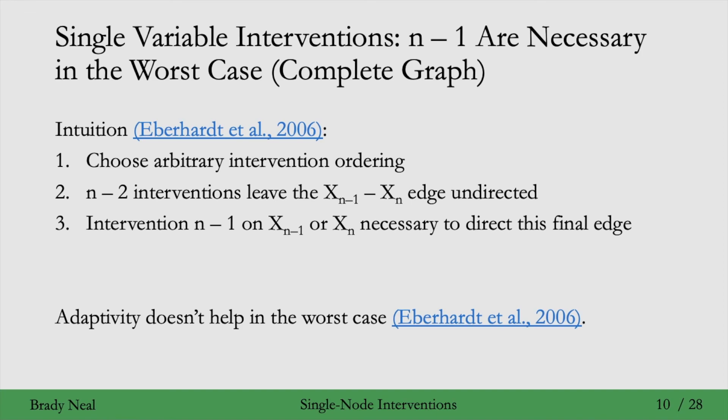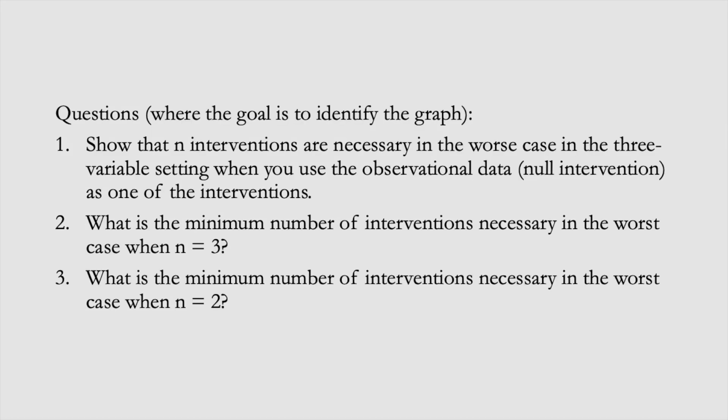That brings us to the end of the first section on single variable interventions and to a list of questions. The first question: show that n interventions are necessary in the worst case in the three-variable setting when using observational data as one of the interventions. The second question: what is the minimum number of interventions necessary in the worst case when n equals 3? The third question: what is the minimum number of interventions necessary in the worst case when n equals 2?